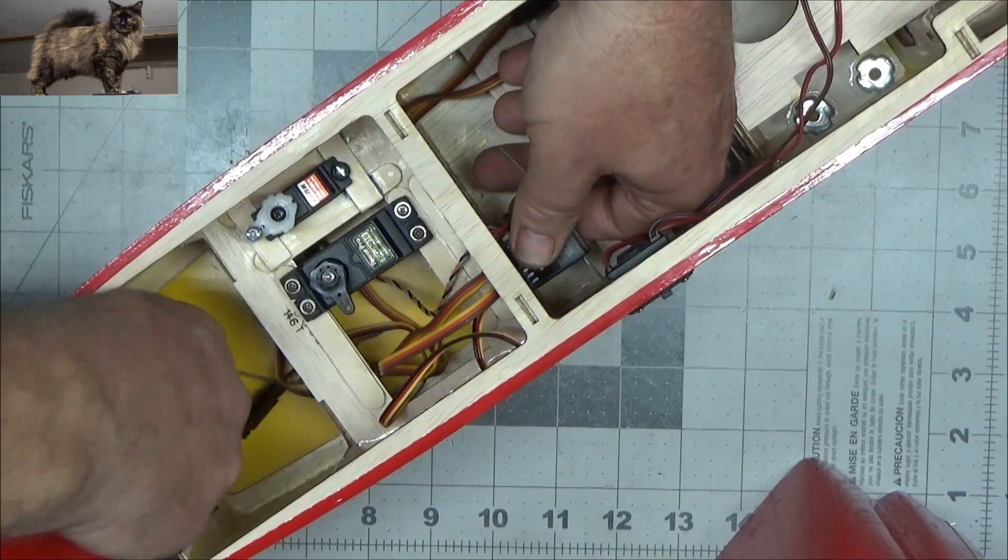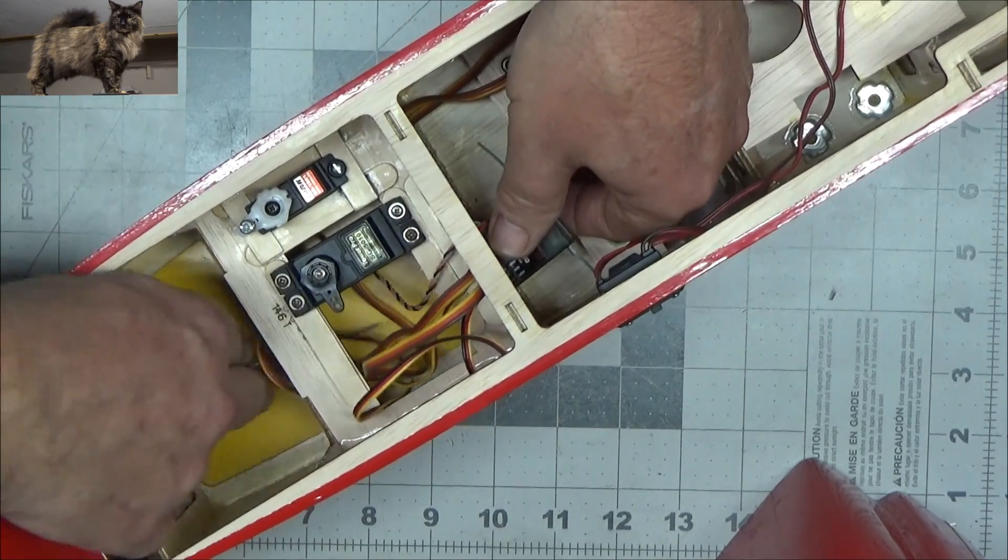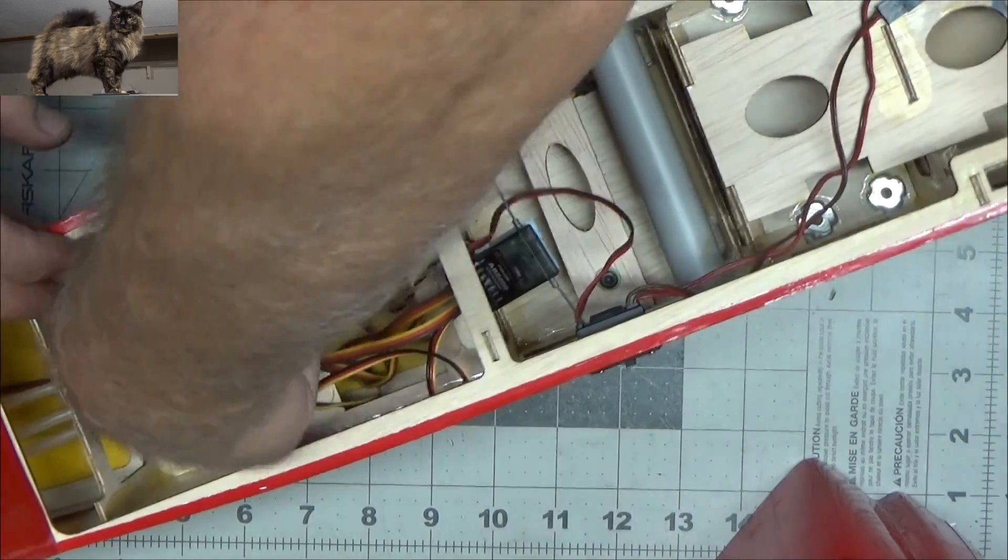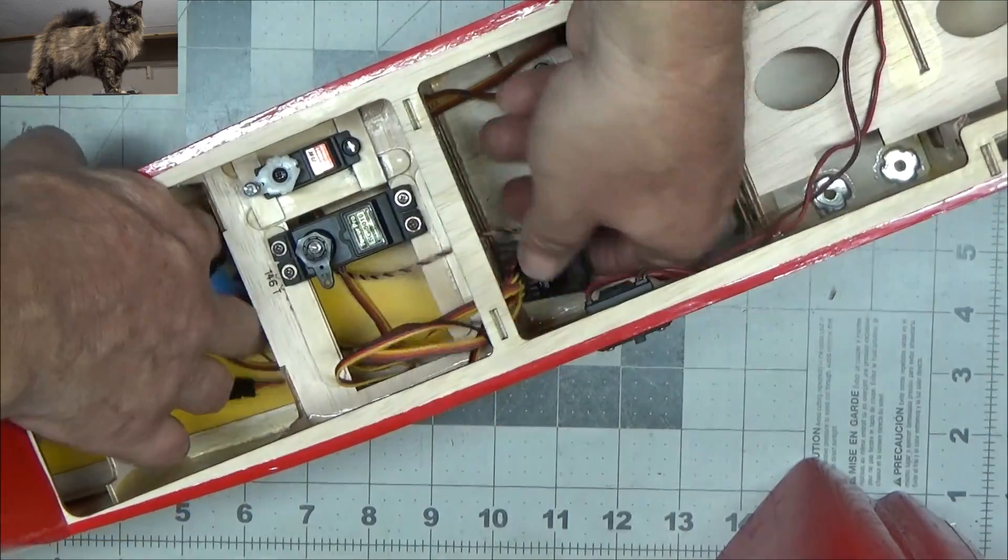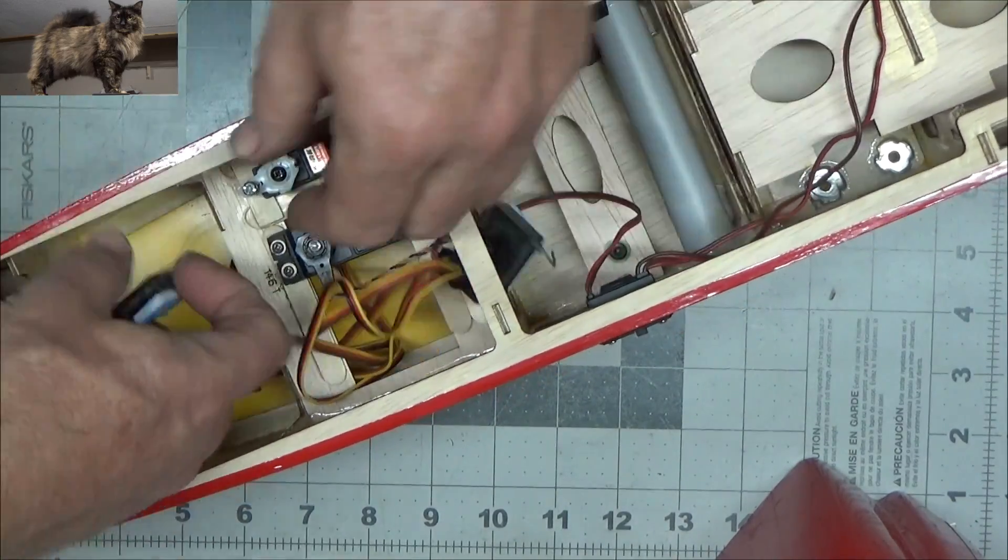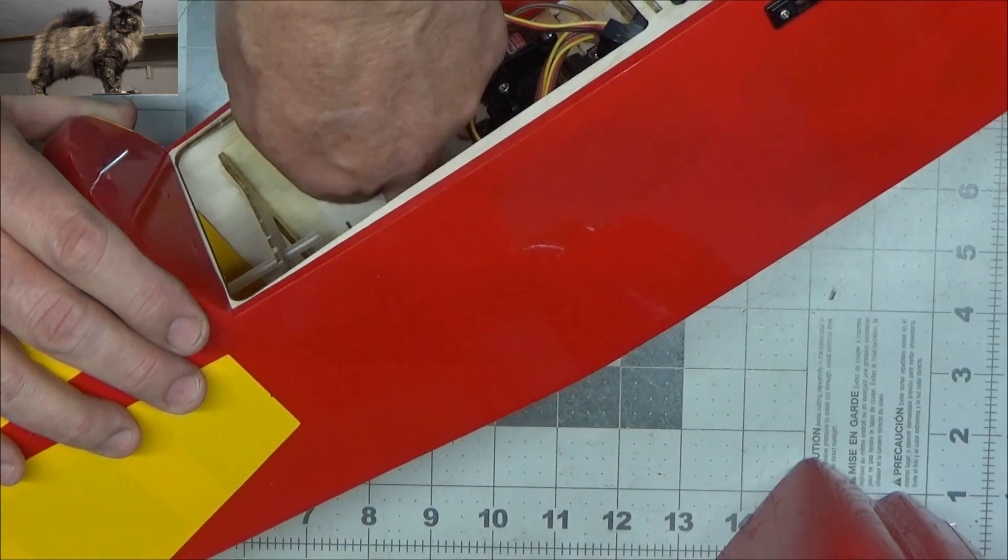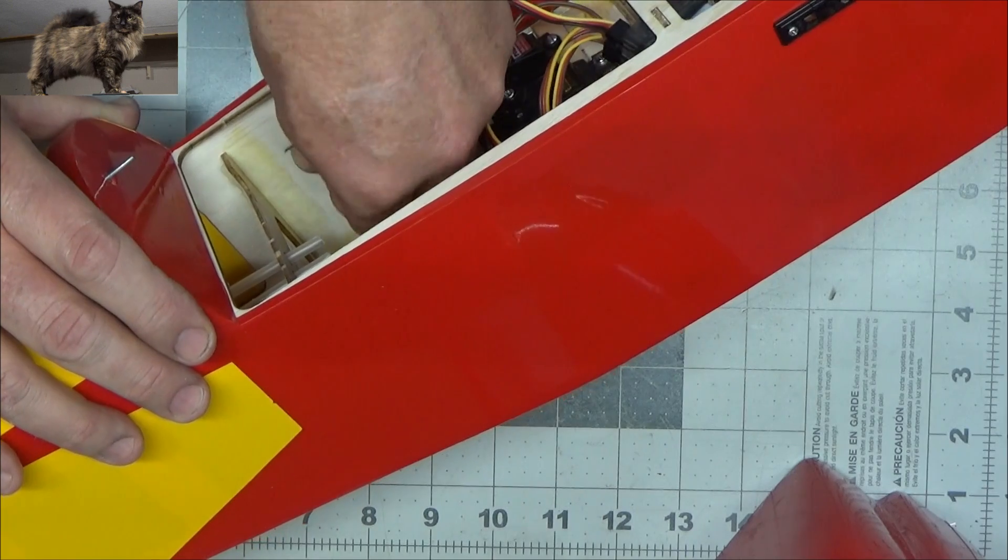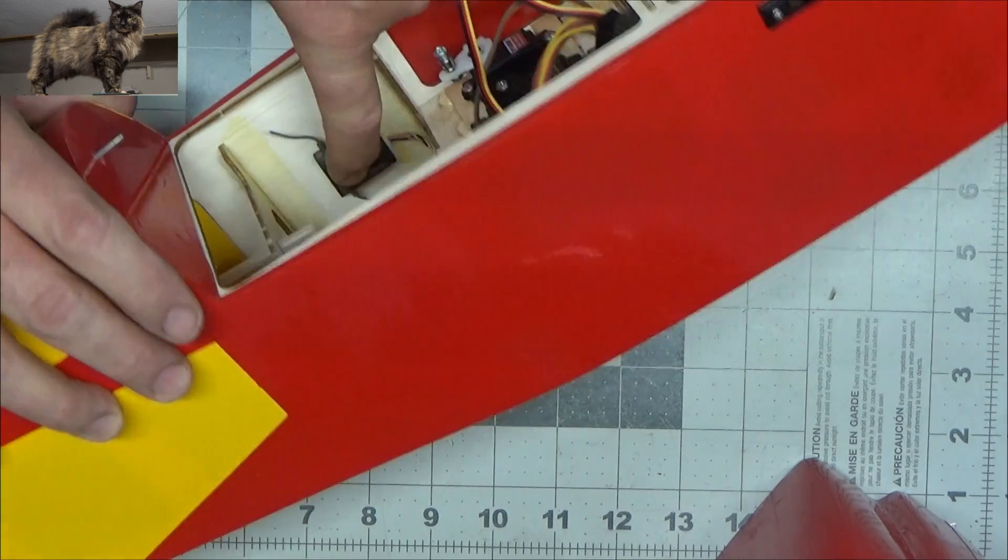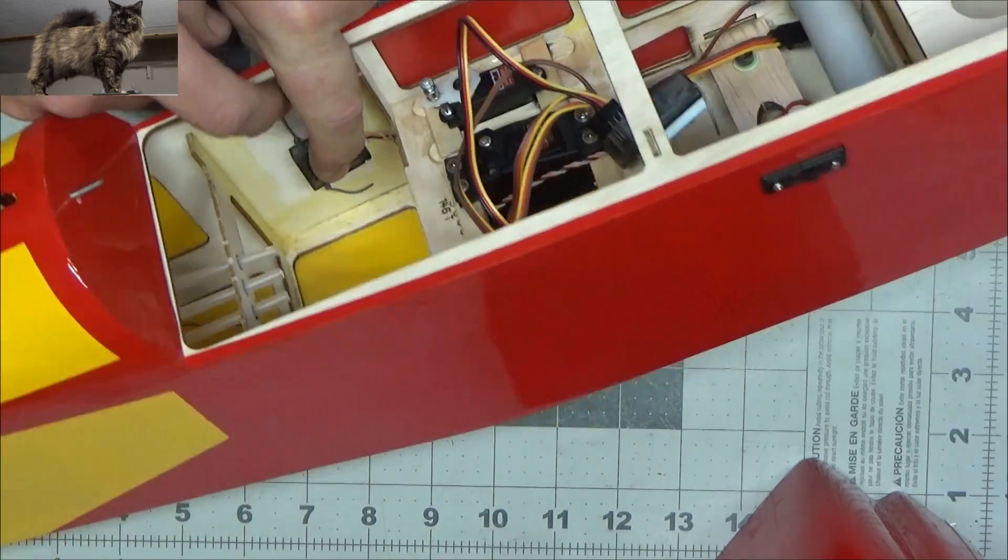And then this auxiliary receiver, secondary, I'm not really sure what they call this. There's a pain in the ass, I can tell you that. It's going to come over here on this side of the fuselage with the antennas oriented this way, straight up, straight down.